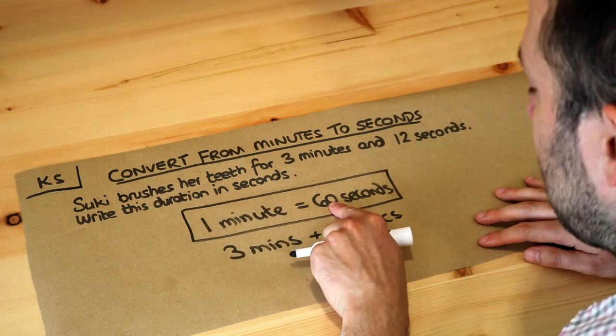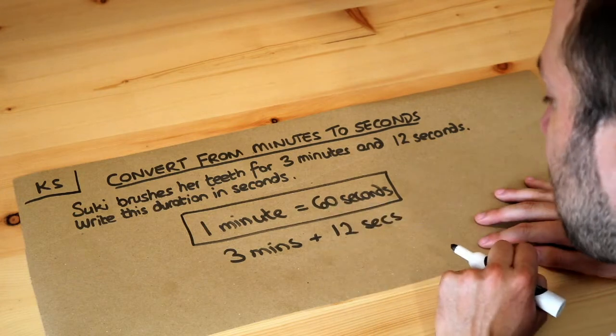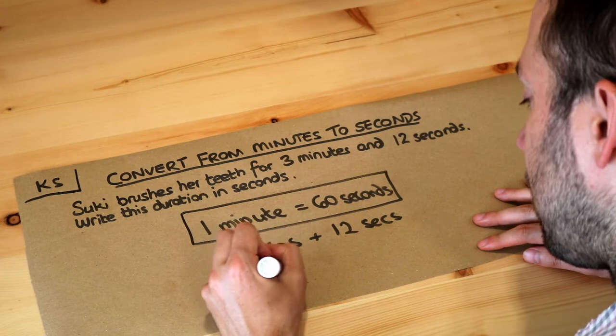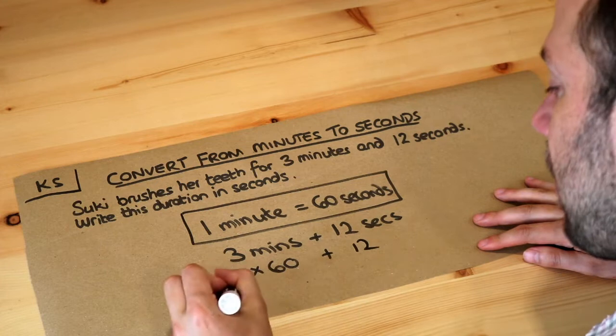If 1 minute is worth 60 seconds, then to get 3 minutes we just need to times the 60 by 3. We've got 3 lots of 60 if we have 3 minutes. So we do 3 lots of 60, 3 minutes worth of seconds, plus the extra 12 seconds we have here.